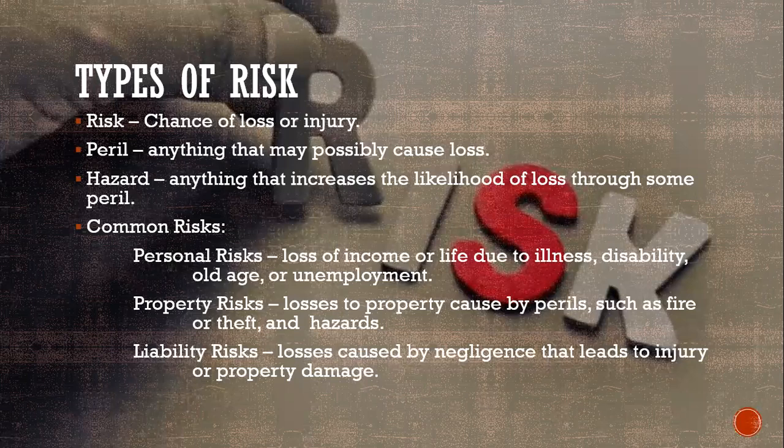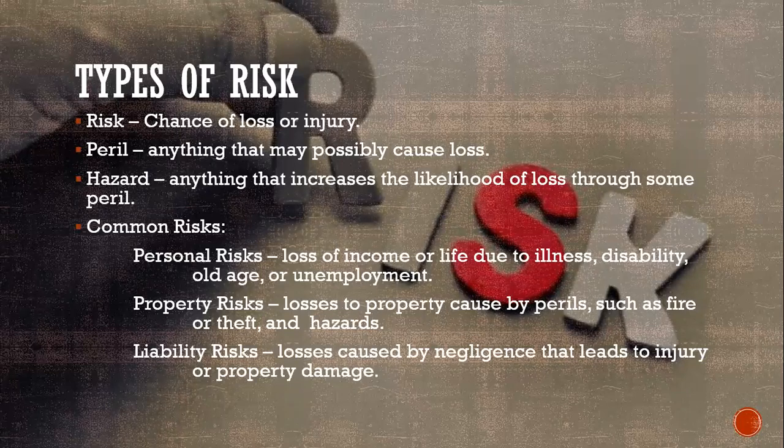We have different types of risk. Risk itself is just the chance of loss or injury, and peril is anything that may possibly cause loss. So that could be a tornado, a flood, a car accident, an earthquake, theft — any of that would be considered peril. Hazard is anything that increases the likelihood of loss through some peril. So you might live in an area that is prone to flooding, which would be a hazardous area for flooding.